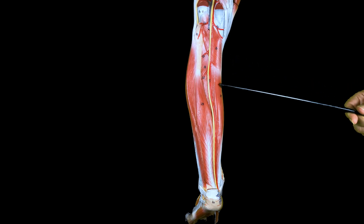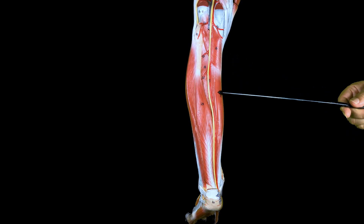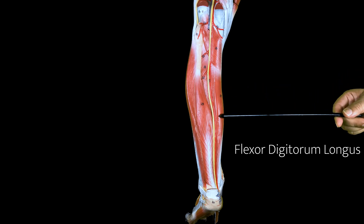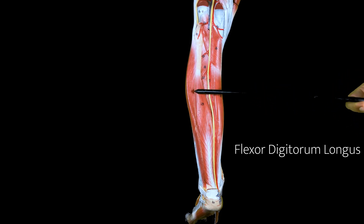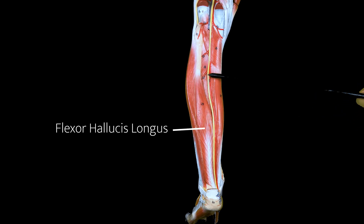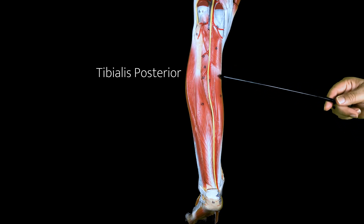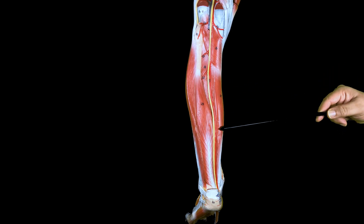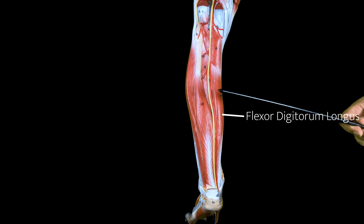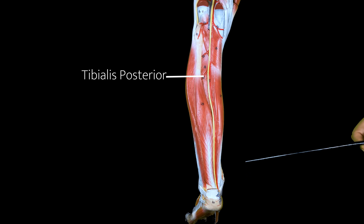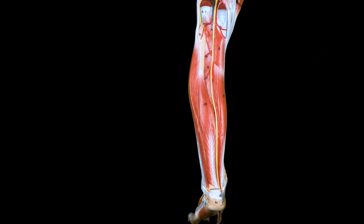Coming down from the popliteus, the most medially located muscle belly is the flexor digitorum longus, and on the other side is the flexor hallucis longus, with the tibialis posterior muscle in between. As the names suggest, flexor digitorum longus goes to the digits, flexor hallucis longus goes to the big toe or first digit, and tibialis posterior goes down to attach at various locations.